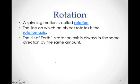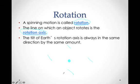There's revolution — us moving around the sun — and then there's rotation, which is just the Earth spinning on its rotational axis. The tilt of the Earth's rotational axis is always the same direction by the same amount. No matter where the Earth is in its revolution around the sun, the tilt of the axis always points in the same direction.